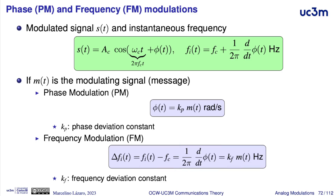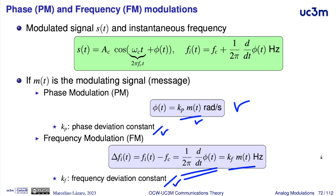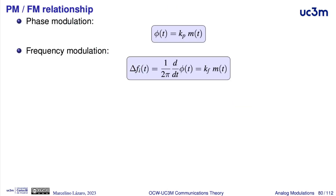The definition for these two modulations is very simple. In a phase modulation, phi of t is proportional to the modulating signal. In a frequency modulation, the derivative of phi of t is proportional to the modulating signal, with two proportionality constants: kp, the phase deviation constant, and kf, the frequency deviation constant. There is a very close relationship between phase and frequency modulation, and to analyze this relationship, we will compare the expression for phi of t and the expression for the derivative of phi of t for these two modulations.